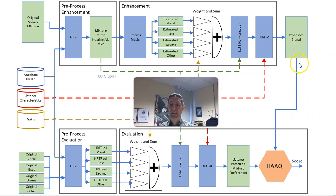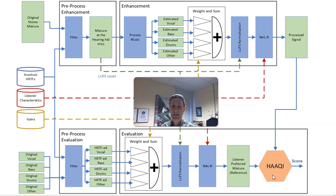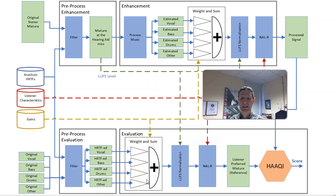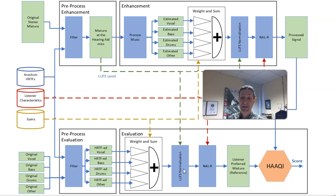That hearing aid signal is then compared to a reference. Our metric here is HACKY — you could use another metric for development work; signal-to-distortion ratio would be quite useful — but we use a Hearing Aid Audio Quality Index, and we provide all the code for that. This metric compares the hearing aid output signal to a reference. The reference is made by taking the vocals, bass, drums, and other from the original stems, applying the same filter to propagate to the ears, applying the same weight-and-sum process with gains, and running it through NALAR again. There are also LUFS normalization blocks at key points to prevent distortion.